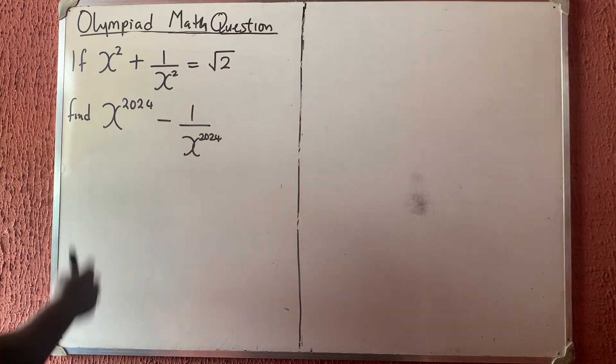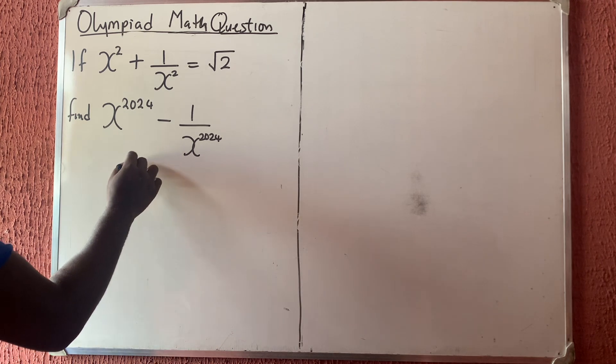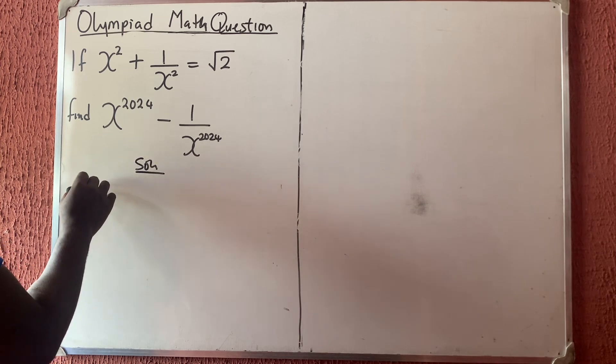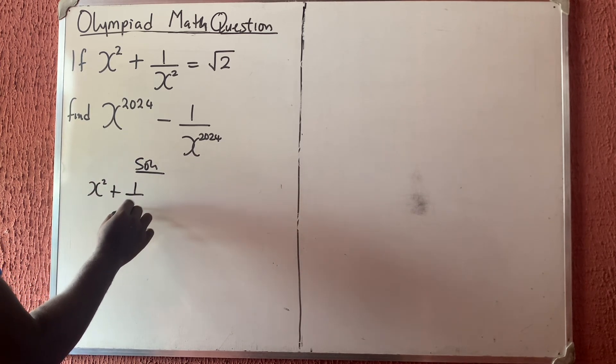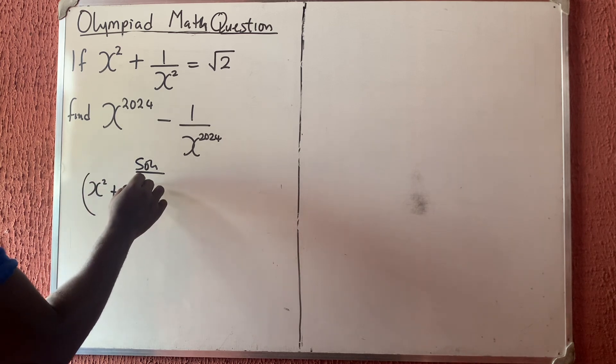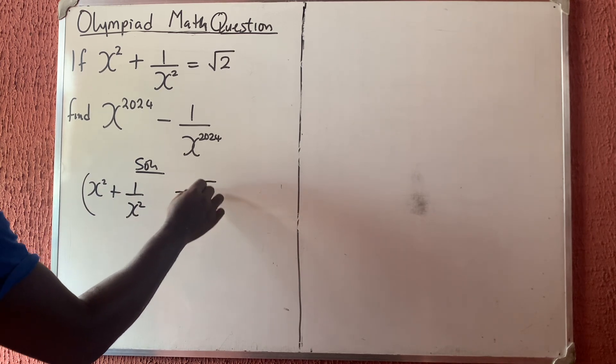In this particular video, we are going to be solving this simple Olympiad math problem. This is very simple. So from what they gave us, look at this. They gave us x squared plus 1 over x squared is equal to square root of 2.